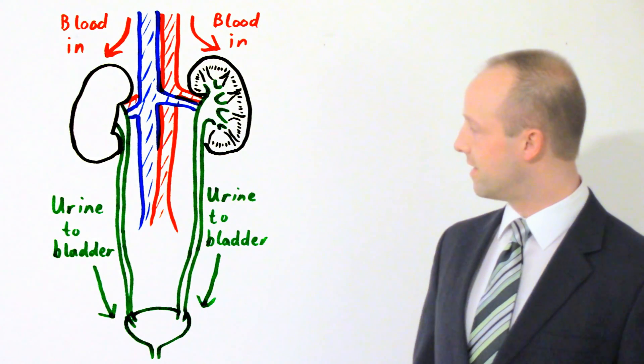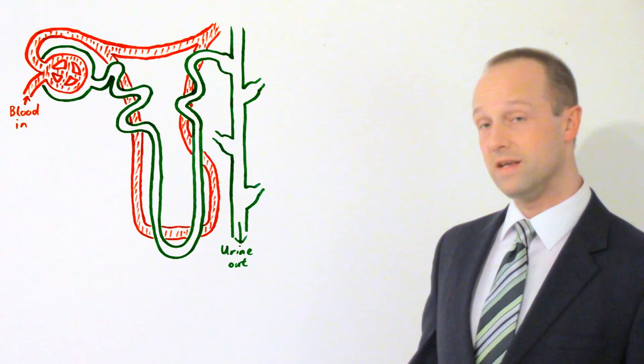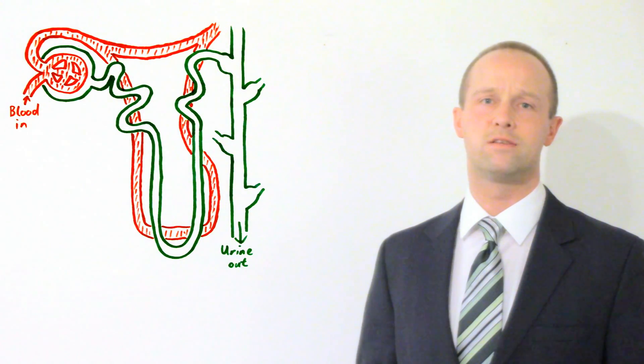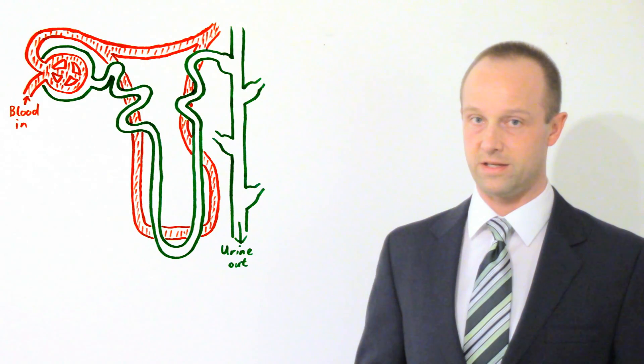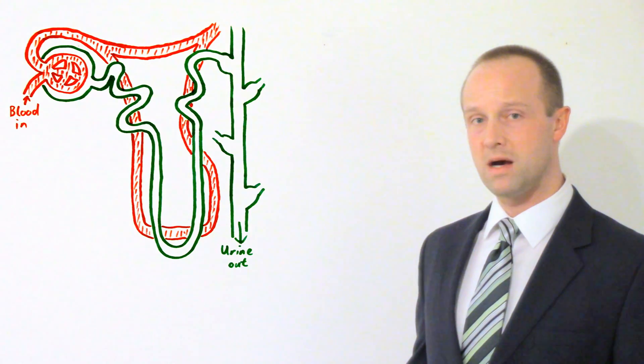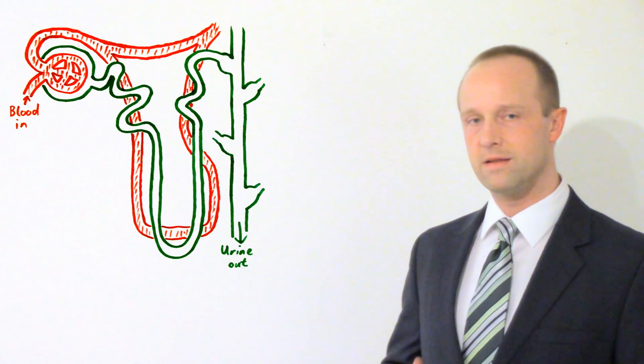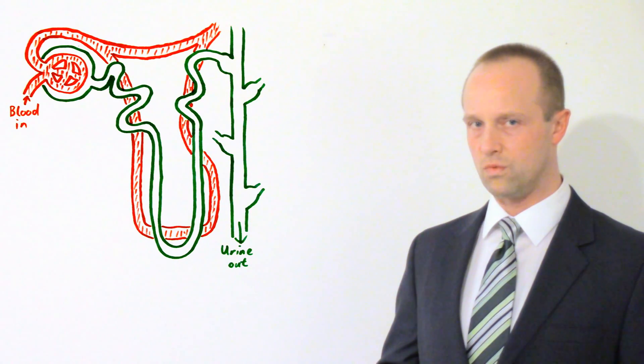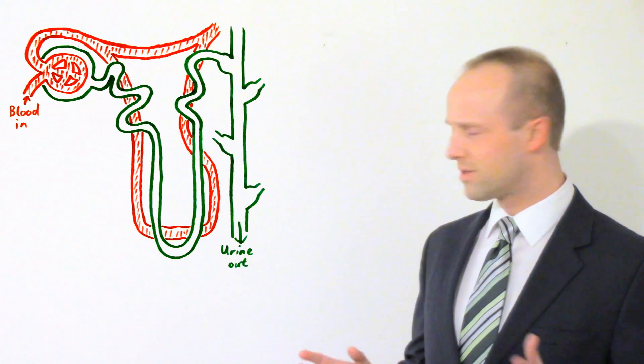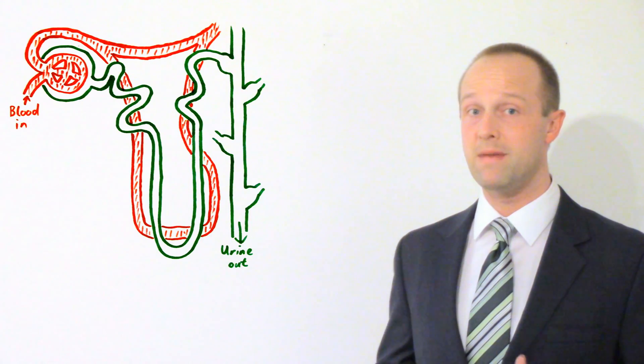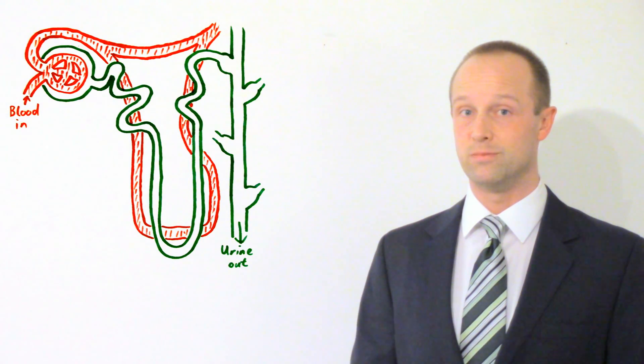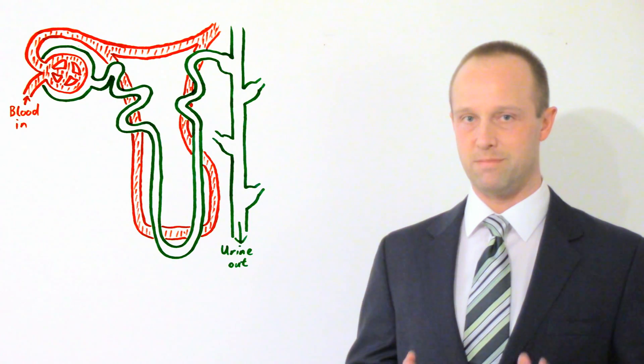Once it reaches the kidney it passes into one of these things. This is a nephron. Each kidney contains around about a million of these in our species. So these are microscopic but they serve a really important role. They're a relatively complicated bit of biology but mainly what they are is a jumble of leaky tubes. Try and keep that in mind.